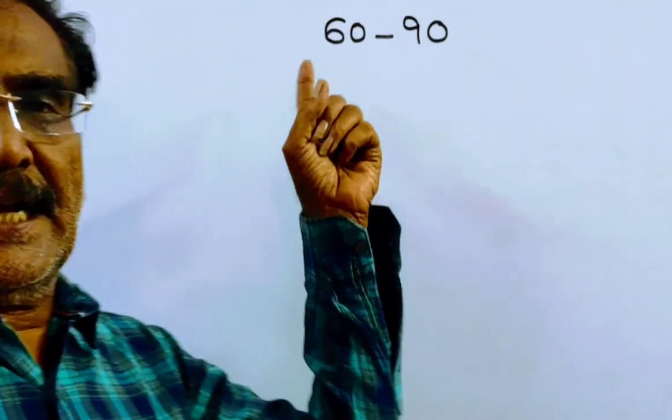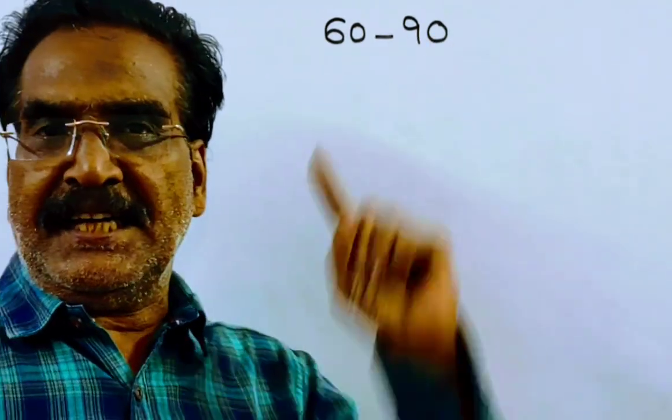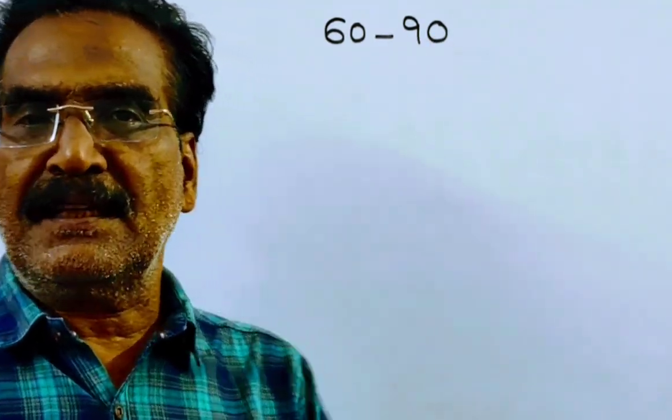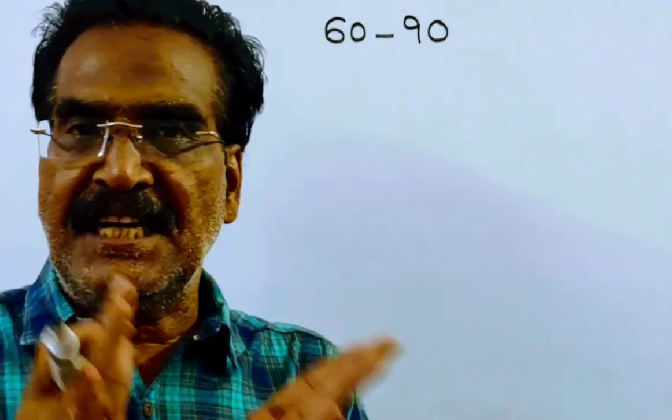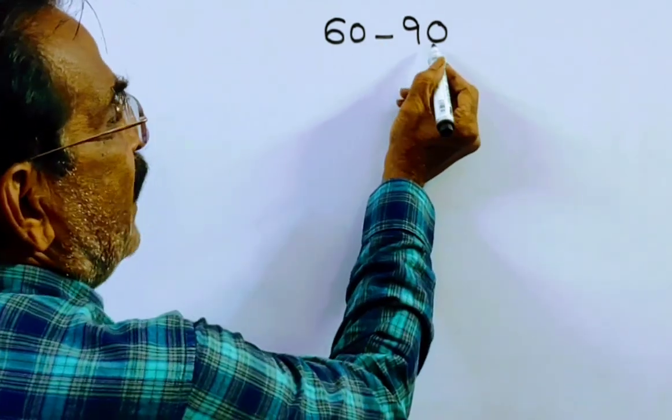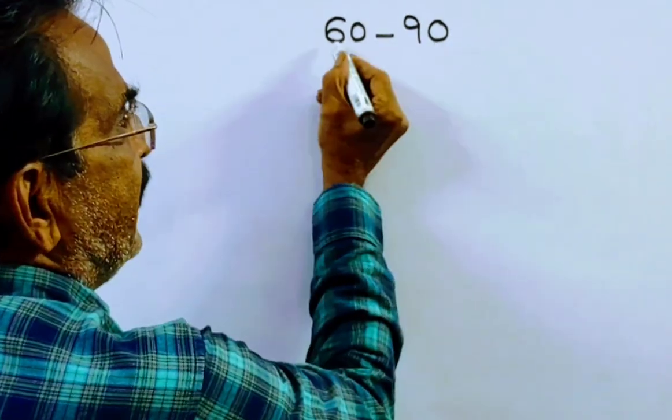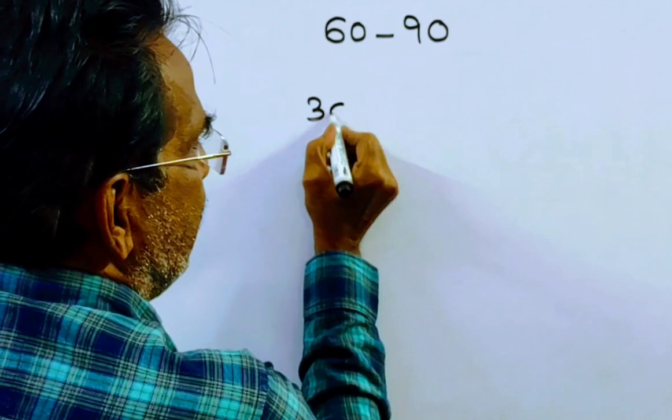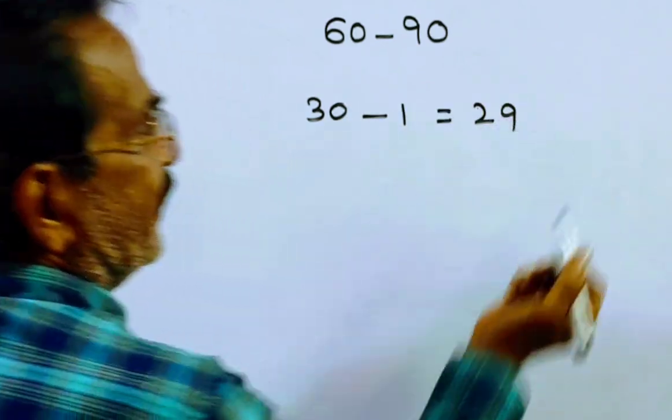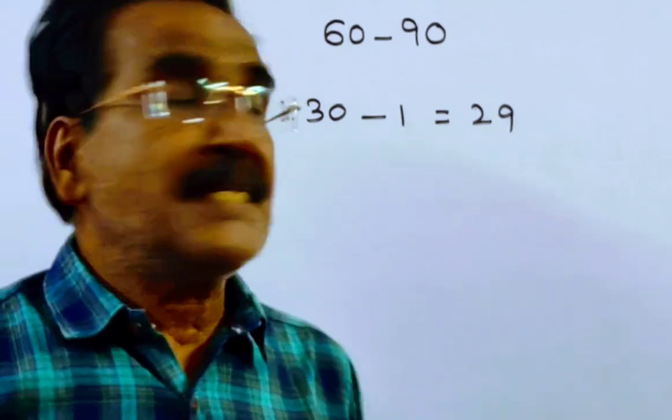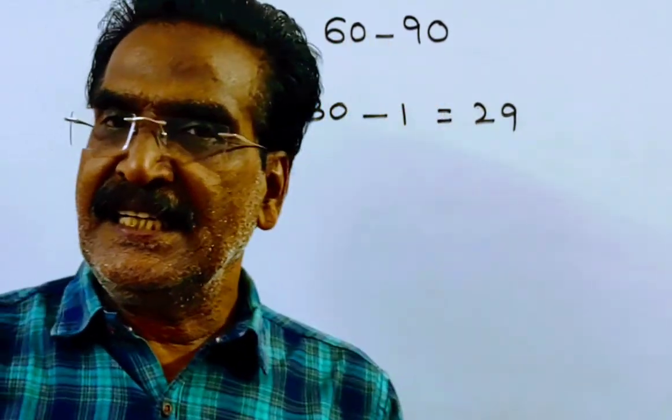Now we want the composite numbers between 60 and 90. How many numbers are there between 60 and 90? Between 60 and 90, how many numbers are there? 90 minus 60, 30 minus 1. So there will be 29 numbers between 60 and 90.